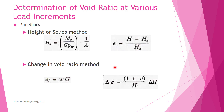The second method is the change in void ratio method. In this method, we first find the final void ratio, then find ΔE (the difference in void ratio) for each load increment, and use those to find all other void ratios.